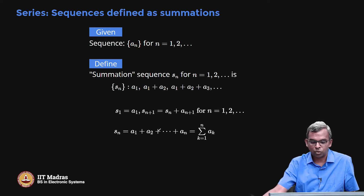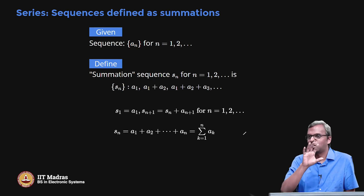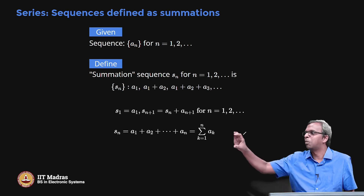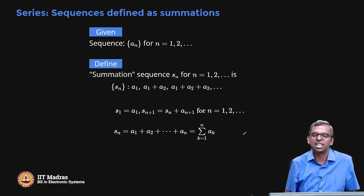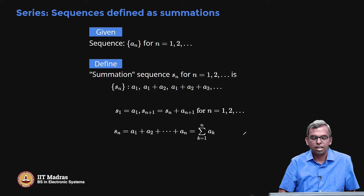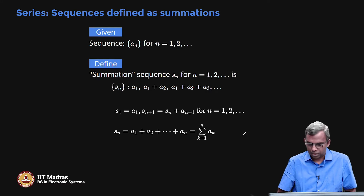The series, instead of all that notation, is usually written simply as a summation with the first few terms shown, dot dot dot, and that represents the series. It is very shorthand notation and very useful. Many sequences we will see will actually be series, and we will worry about the properties of those series as we go along.